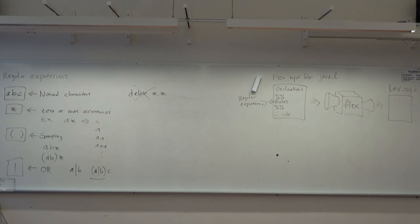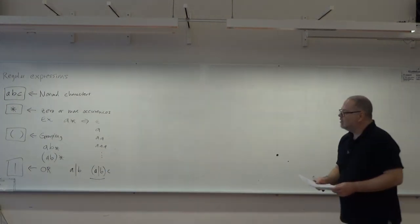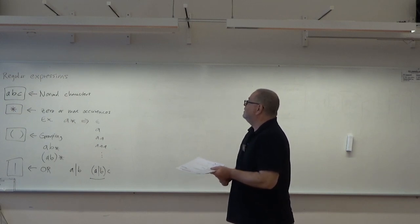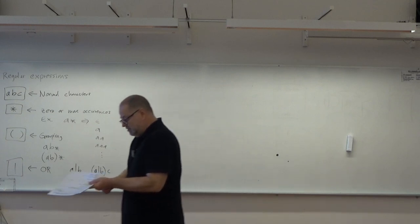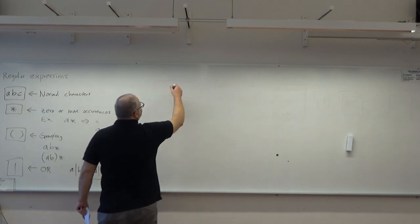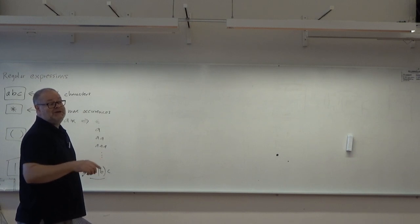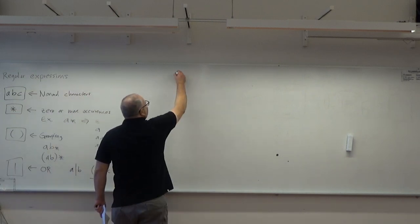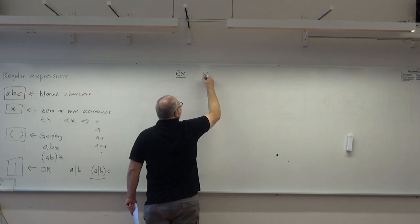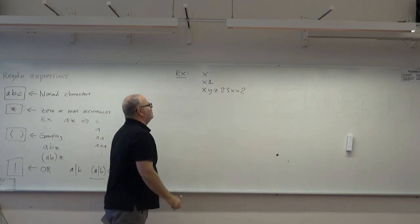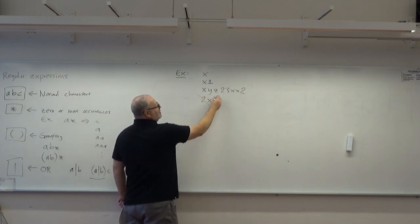These are the basics of regular expressions, and we can use them to define tokens. For example, an identifier in most programming languages is a letter followed by zero or more letters or numbers. Example identifiers: x, x1, xyz23. But not something that starts with a number, because then it will be interpreted as a number.